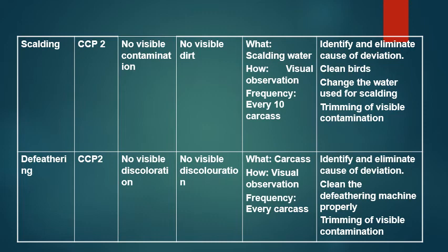For scalding, where birds are kept in hot water, this is CCP2 — there is a possibility of contamination if the water is not changed, and hazards cannot be fully eliminated. The critical limit is no visible contamination or visible dots on the carcass. Monitoring: what — scalding water; how — visual observation; frequency — every 10 carcasses. Corrective action: identify and eliminate cause of deviation, clean birds, change the scalding water, and trim any visible contamination.